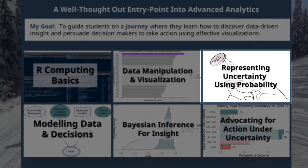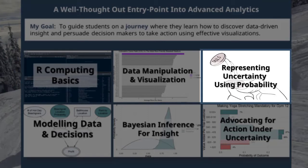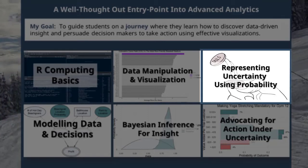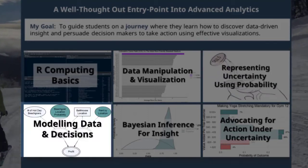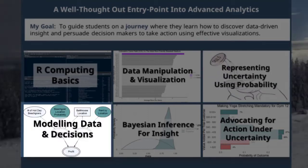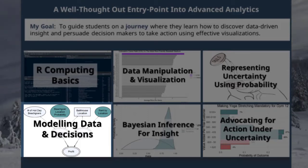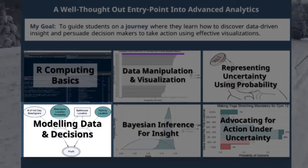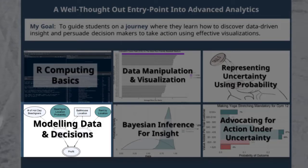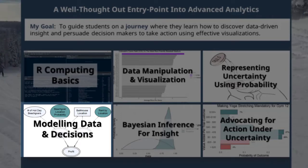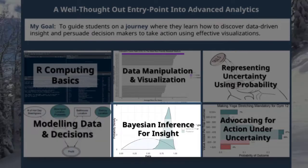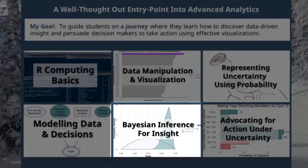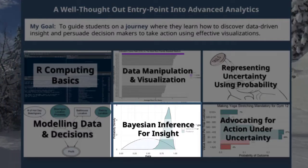we learn to represent uncertainty using probability and a graphical language of random variables. Topic four — modeling data and decisions — we expand our math world representations and learn to model real-world scenarios using probability distributions and pretty pictures that we call generative DAGs and generative decision DAGs.